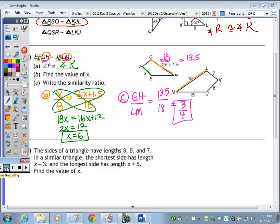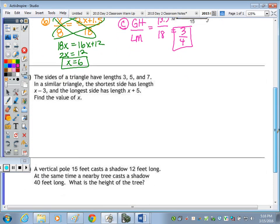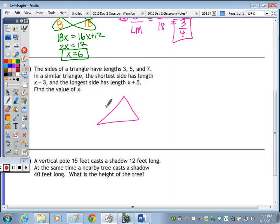In number 3, it says the sides of a triangle have lengths of 3, 5, and 7. So it's good to draw that first, and nothing needs to be drawn to scale. In a similar triangle, so I'll draw another triangle similar. It says the shortest side has a length of X minus 3. Well, that has to correspond to the shortest side here. So this is 3. I'm going to put my X minus 3 here. And then it says the longest side has the length X plus 5. So since 7 is the longest, I'm going to put the X plus 5 here.